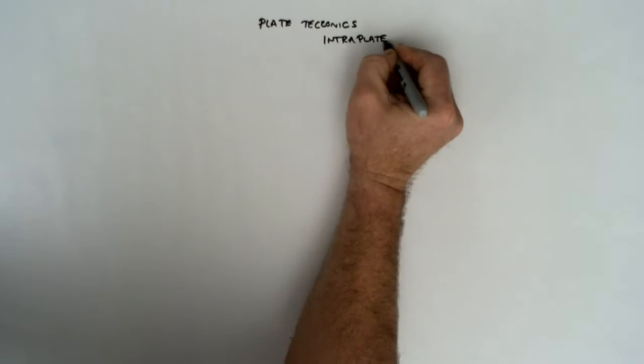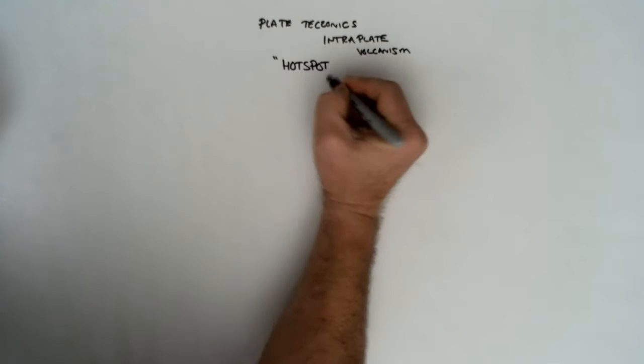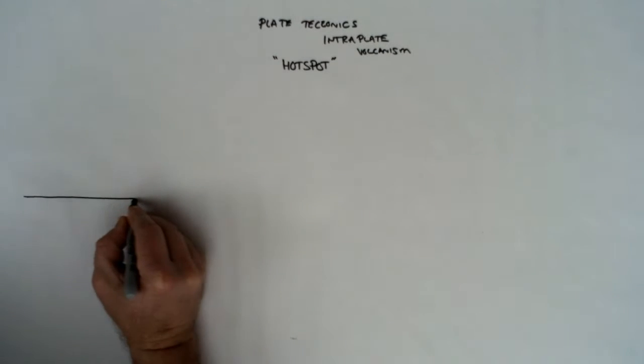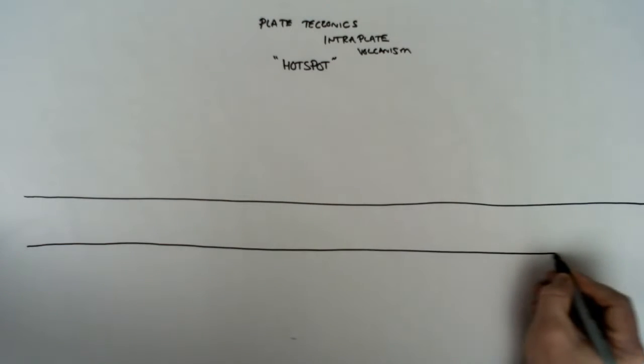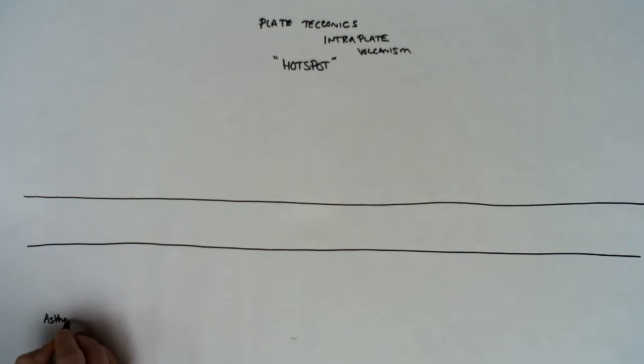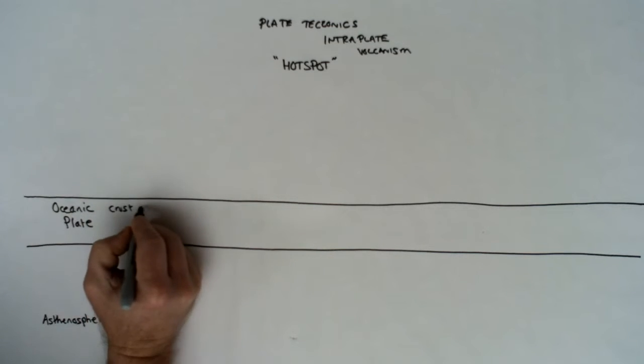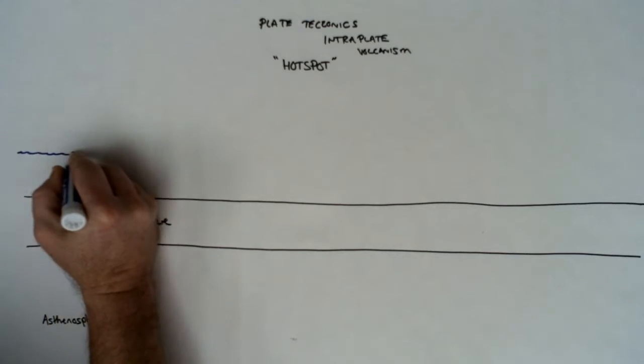We're looking at, in this video today, plate tectonics, looking at intraplate volcanism and looking at hotspots. So areas of magmatic activity and volcanism on the Earth's surface, mostly under oceanic crust on ocean floors but occasionally on continental crust. And in this video, we're looking at how the ocean crust is moving in conjunction with the magma plume.